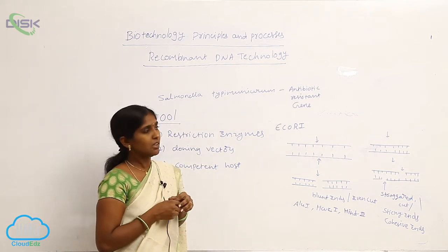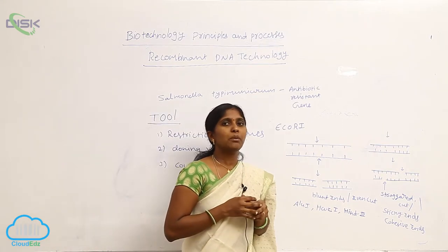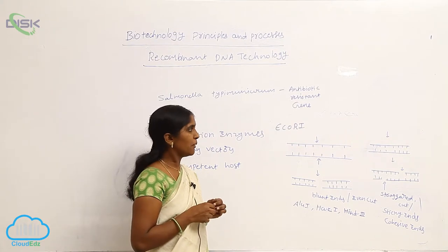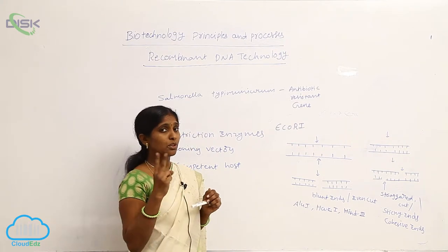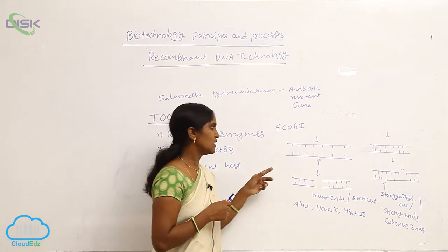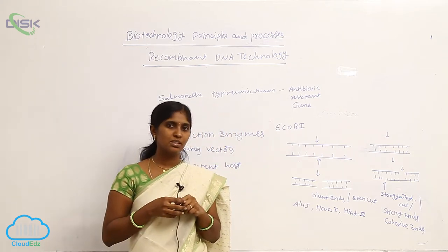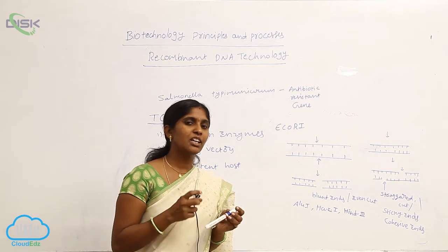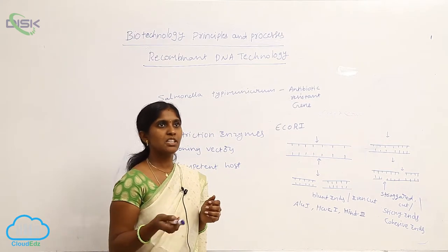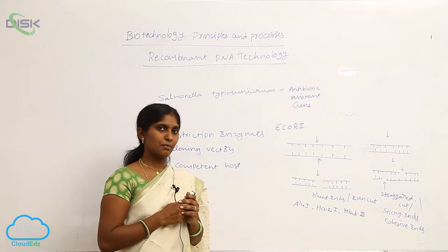Restriction enzymes used in DNA technology produce two types of cuts. Here we see palindromic sequences. Palindromic sequences in double-stranded DNA refer to the reading frame: when you read from 5' to 3' on the upper strand and 3' to 5' on the lower strand, the reading frame is conserved.